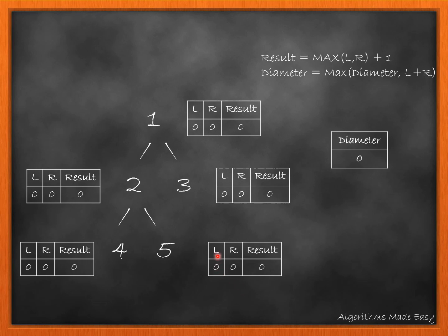L and R denotes the height of left and right subtree. As shown, result denotes maximum of L or R plus 1, which is nothing but the height of the node plus 1. We will update diameter after visiting each node with maximum of diameter or sum of L and R.